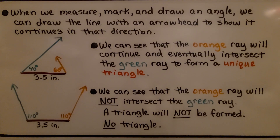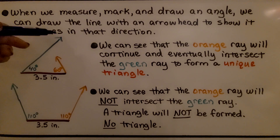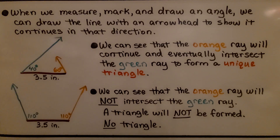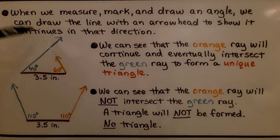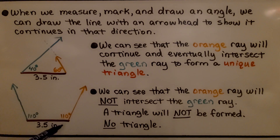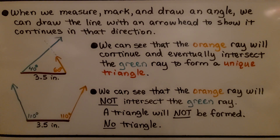When we measure, mark, and draw an angle, we can draw the line with an arrowhead to show it continues in that direction. We can see that an orange ray will continue, eventually intersecting the green one, and it'll form a unique triangle. Here, however, we can see that the orange ray will not intersect the green ray — a triangle will not be formed. They'll continue on in those directions and we won't have a triangle.